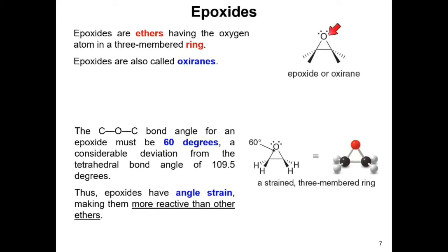Epoxides are also ethers because the oxygen atom is bonded to two sp3 hybridized carbon atoms. The difference is that the oxygen is contained within a cyclic ring, restricting sigma bond rotation. The bond angle within the epoxide ring is only 60 degrees, which considerably deviates from the ideal bond angle of 109.5 degrees, making the epoxide ring much more unstable and reactive compared to ethers.